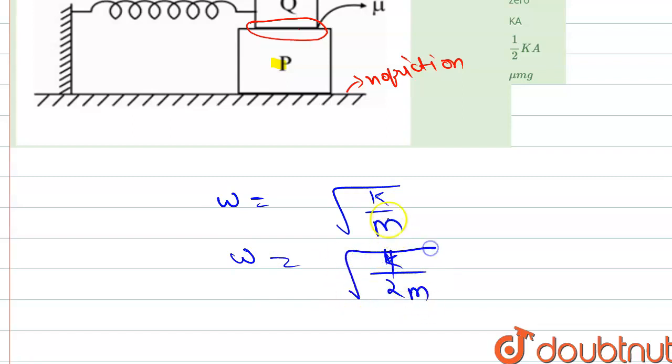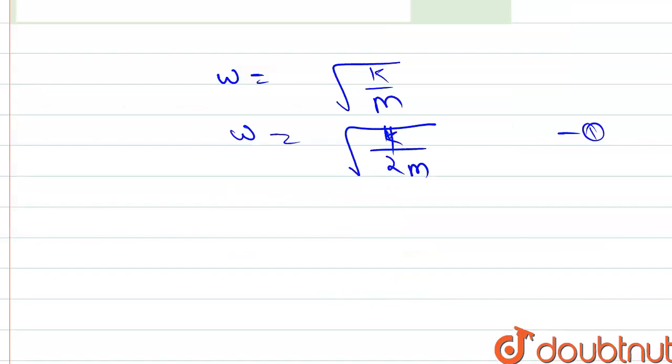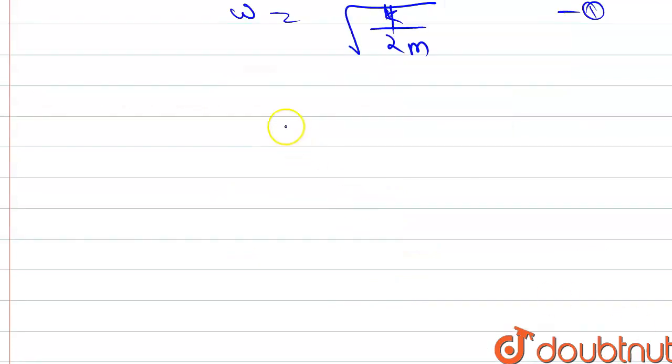From this, acceleration a = ω² × amplitude. So a = ω², which is k/(2m), times a. Therefore a = ka/(2m). This is our acceleration. Now we need to find the friction force.